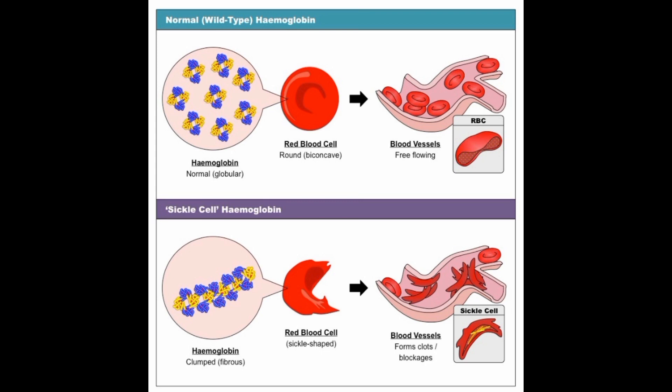People with HBSC have an increased risk of infections, particularly those caused by bacteria that can cause pneumonia or meningitis. HBSC can also cause a range of eye problems, including retinopathy, which is damage to the retina of the eye. Treatment for HBSC focuses on managing the symptoms and complications, including pain management, blood transfusions, medications to reduce the risk of infections, and regular medical checkups to monitor for any potential complications.